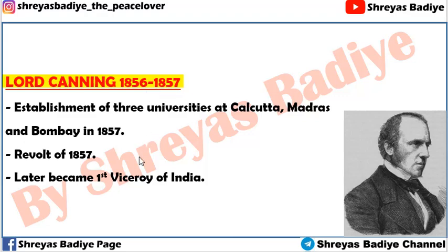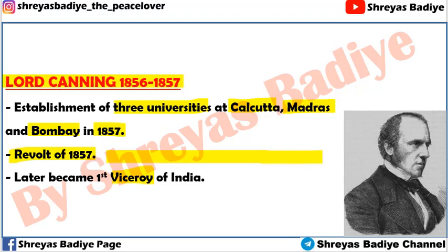Now we will go on to study the Viceroys of India, starting with Lord Canning. During his time as Governor General, three universities were established — one in Calcutta, one in Madras, and one in Bombay — as part of educational development. The main event was the Revolt of 1857, which took place during Lord Canning's time as the last Governor General of India.